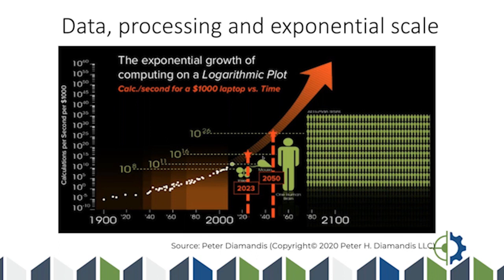By about 2023, that $1,000 will have as much computational power as the human mind. And if you fast forward through exponential growth, by 2050 that same $1,000 will buy enough processing power as the entire human race — an astounding thing to wrap your head around. It's this driving force in tech — cheaper and greater computational processing power, data storage, and the hypercloud — that is making Industry 4.0 real.